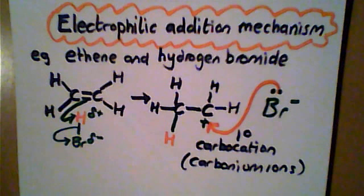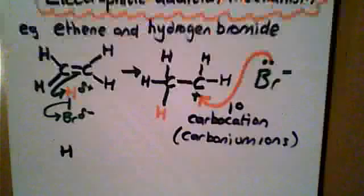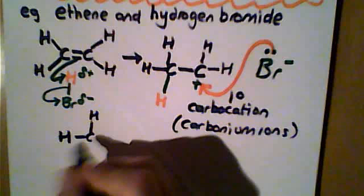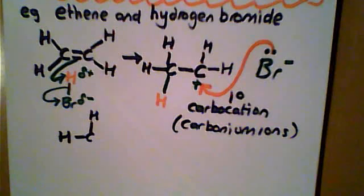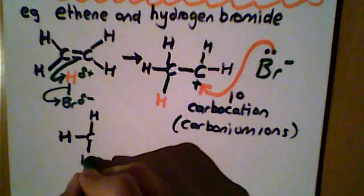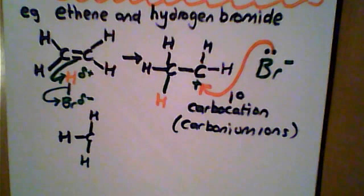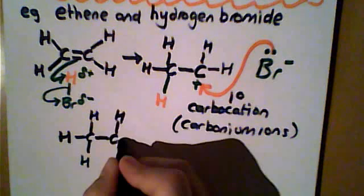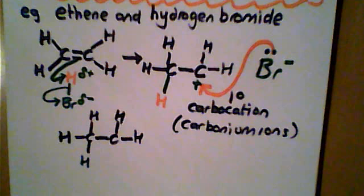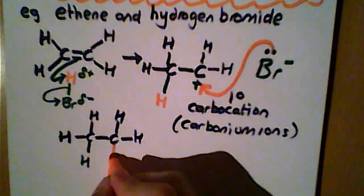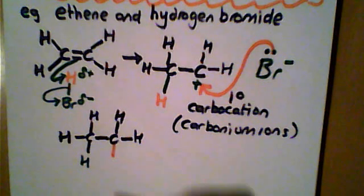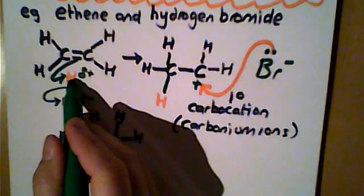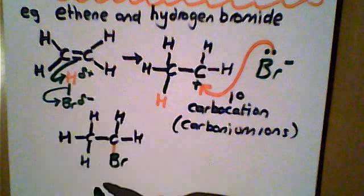The resulting molecule formed has hydrogen on one of the carbons across the double bond, and on the second carbon the bromine atom is attached. It's called electrophilic addition because the electrophile has added across the double bond.